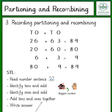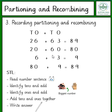We then move on to recording partition and recombining. The number sentence here is 26 plus 63. First we identify the 10s and add them together. The number 26 has 2 tens — 2 tens are 20. The number 63 has 6 tens — 6 tens are 60. We put the bigger number, 60, into our head and put 2 tens on our fingers to count on: 60, 70, 80.